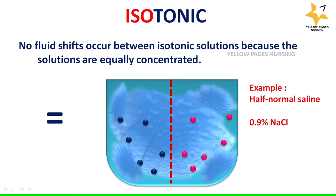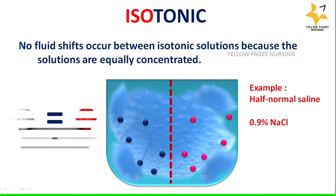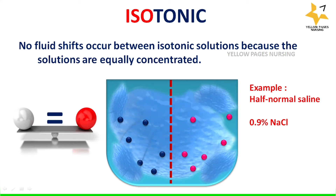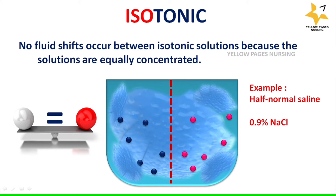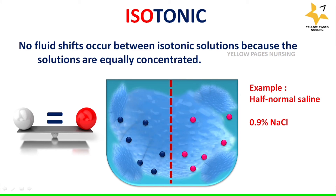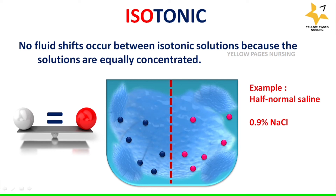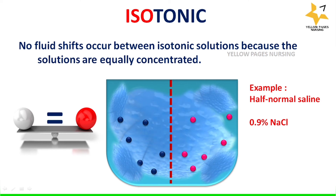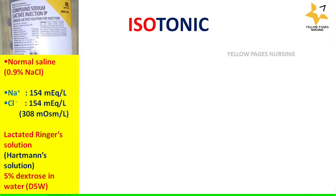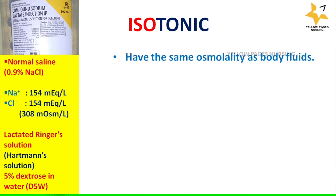Next comes isotonic solutions. No fluid shifts occur between an isotonic solution and another solution because the concentrations are equal. An example of an isotonic solution is 0.9% sodium chloride.